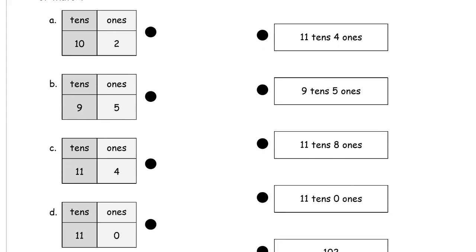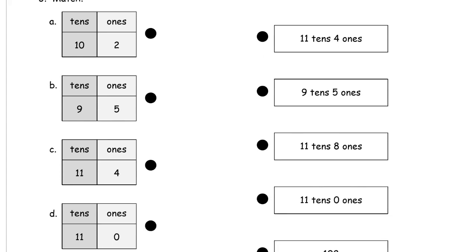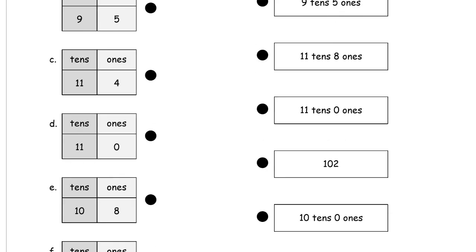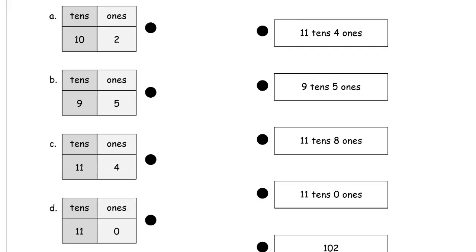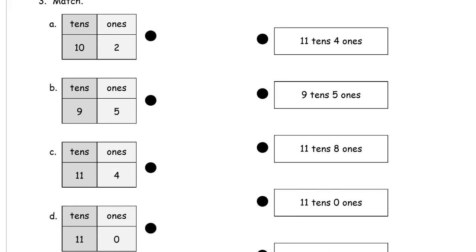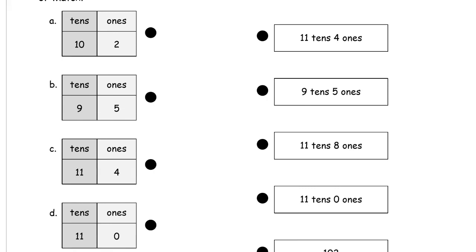And now we're doing a big match. So we have some of these numbers written in unit form, and some on the left they're all in a place value chart. But they shouldn't be too hard to match up. Because we're looking here at, for example, 11 tens, four ones. So we just have to look for something that says 11 tens, four ones. Here it is. Eleven tens, four ones. So these two match.